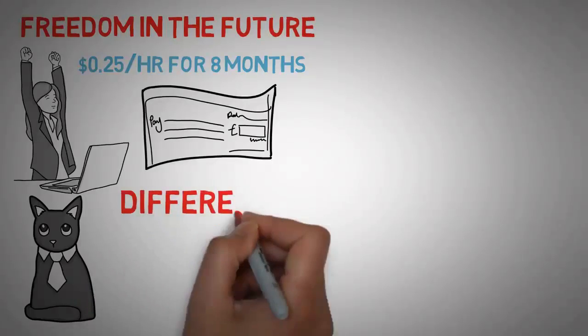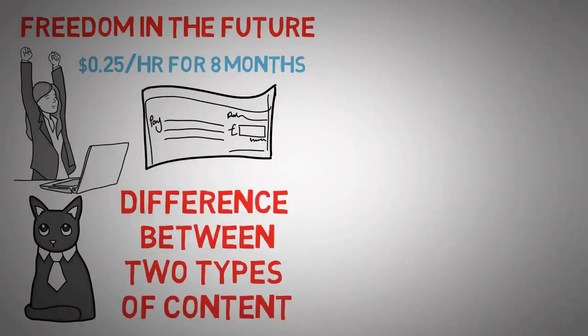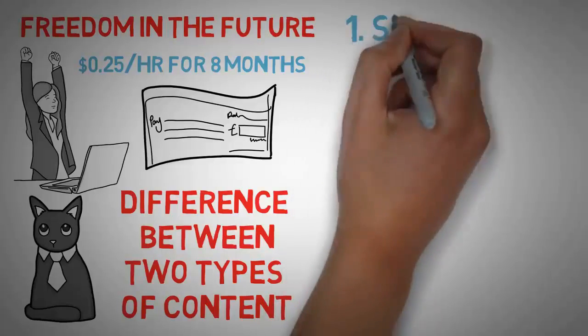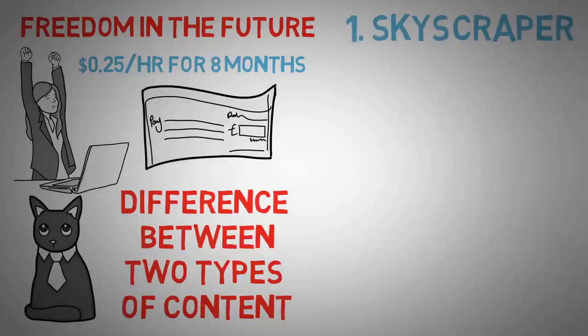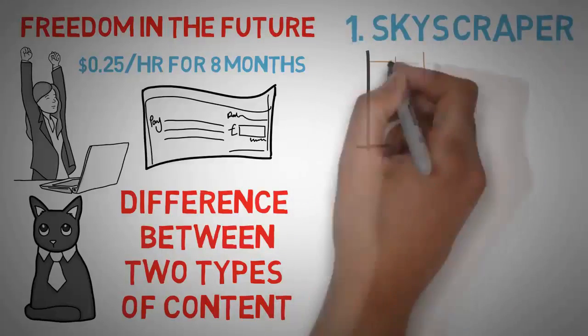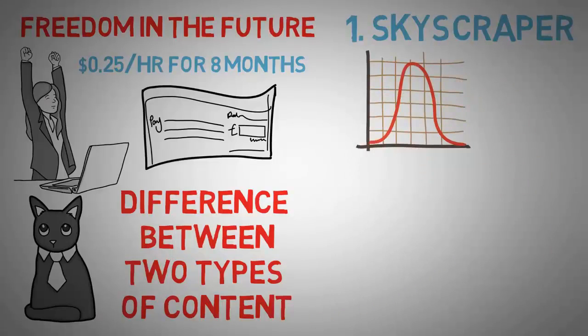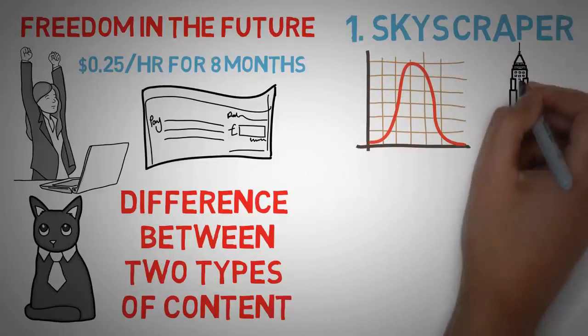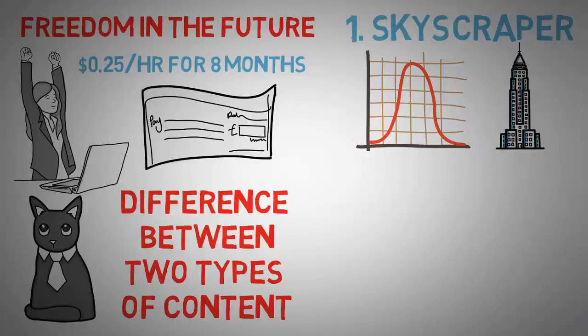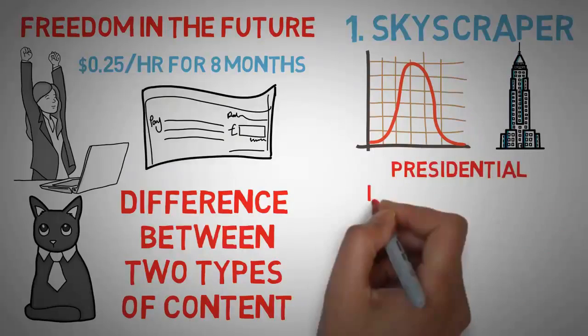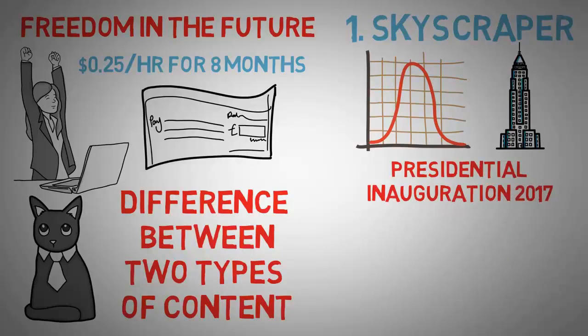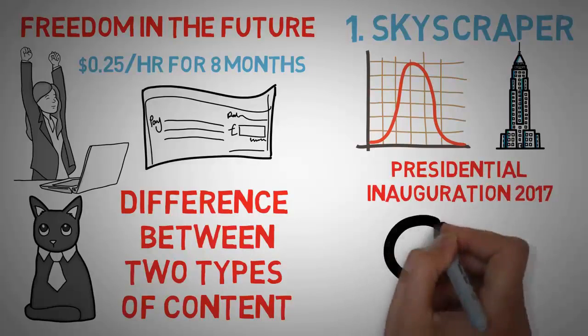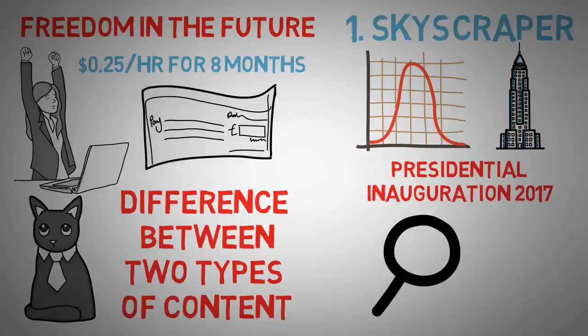Now you must understand the major difference between two types of content. The first is called skyscraper, and that is because the traffic, the interest, and also the money graph look like a skyscraper. A whole bunch of views and traffic and money for a couple days, and then it dies down to just a couple pennies. An example of skyscraper content would be the presidential inauguration in 2017. It's not going to be something someone is searching for 30 to 40 years from now.